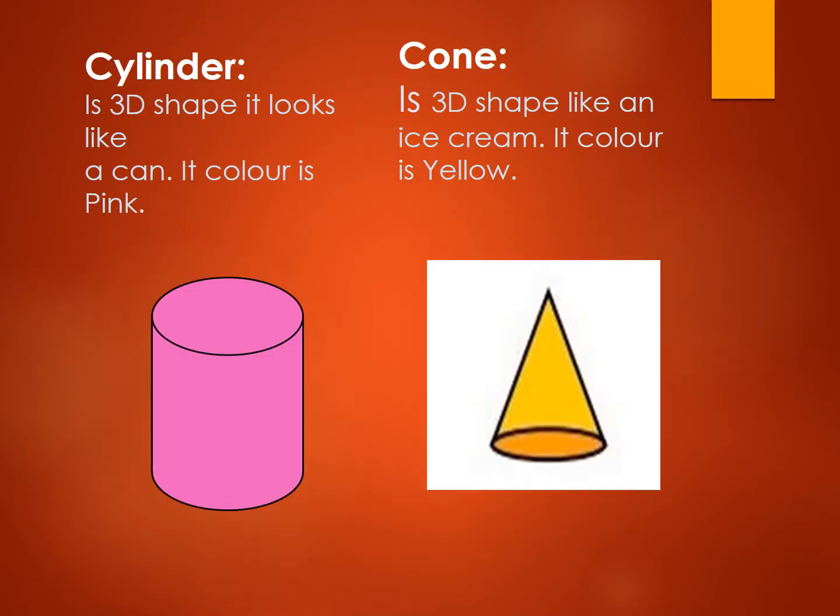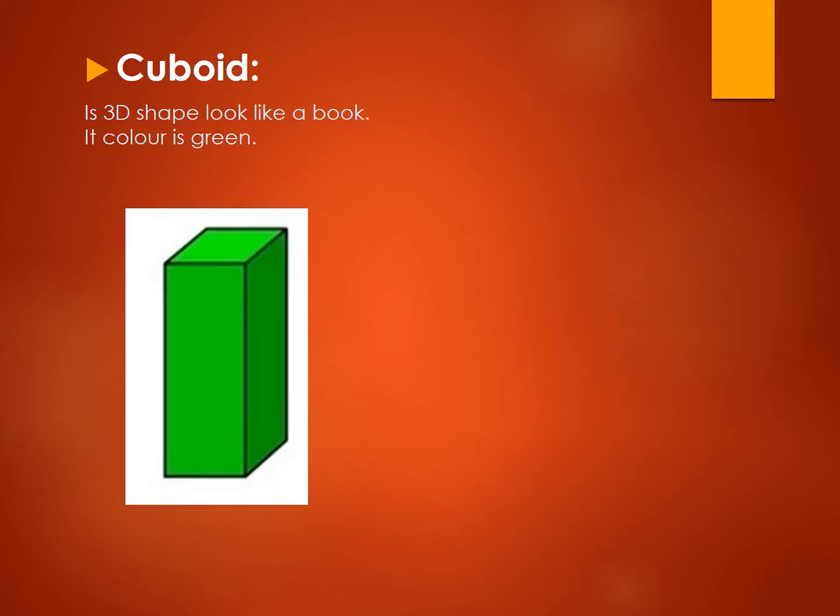Cylinder is 3D shape. It looks like a can. Its color is pink. Cone is 3D shape like an ice cream. Its color is yellow. Cuboid is 3D shape look like a book. Its color is green.